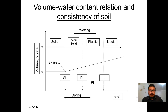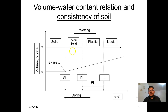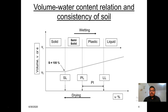If we plot the change in volume against water content, we get a graph showing that with increasing water content, the volume of a soil sample increases, and with drying, the volume decreases. But after a certain point, if we further decrease the water content, the volume will not change — it remains constant. That specific water content is called the shrinkage limit. At the shrinkage limit, the soil will be at 100% saturation.